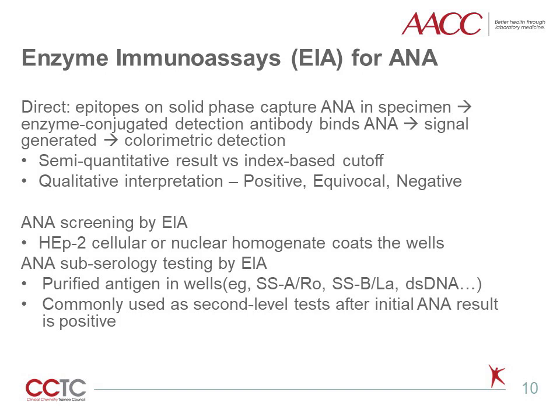ANA testing's first modern evolutionary shift came with enzyme-linked immunosorbent assay, or ELISA. When testing ANA with ELISA, epitopes are either cloned or extracted from source material such as HEP2 cells and encoded on solid-phase wells. ANA in the patient's serum are captured when they bind corresponding epitopes, and an enzyme-conjugated detection antibody binds the ANA. Signal is generated from a reaction driven by the enzyme on the detection antibody and is captured and measured with a colorimetric detector. Signal obtained from a patient specimen is compared to a decision point determined by the analytic calibration, and an index or cutoff is used to determine if ANA are present or not.